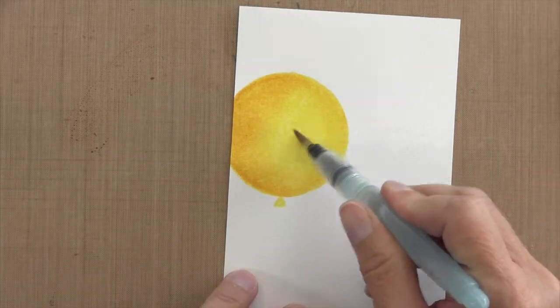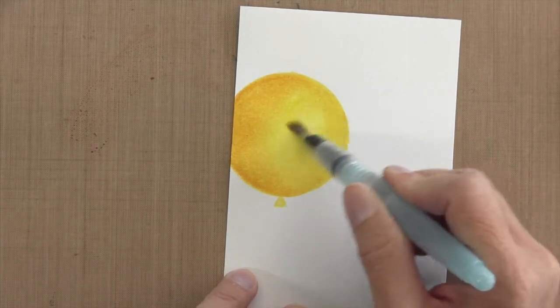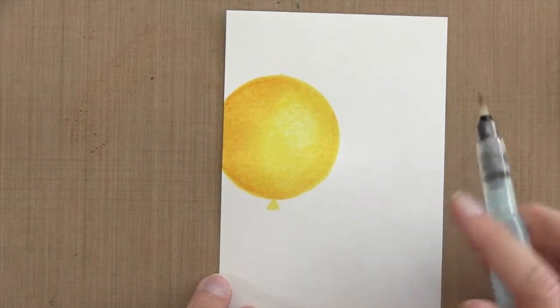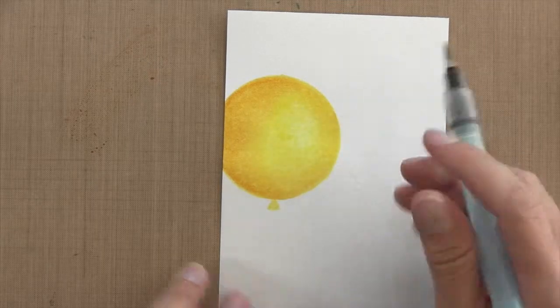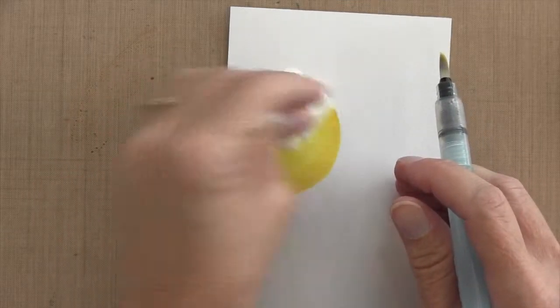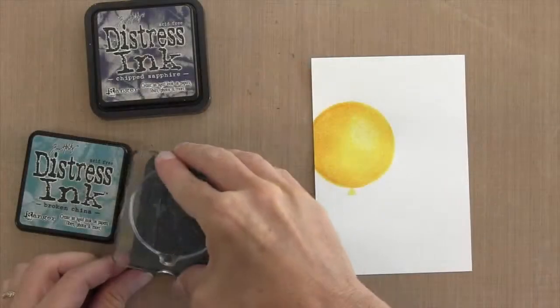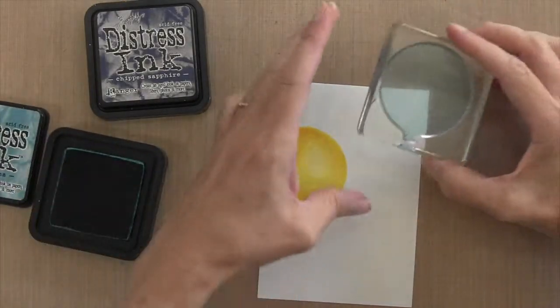Now that I've added some dark color for shadow, I'm going to remove some color for reflection. I'm going to clean off my aqua painter, lay down some water, and remove some of that distress ink. This is pretty easy to do - you just have to blot it with a tissue. You can do it a couple of times if you want to, just make sure you use a clean area of your tissue. Now I have a nice pretty light reflection on the balloon.